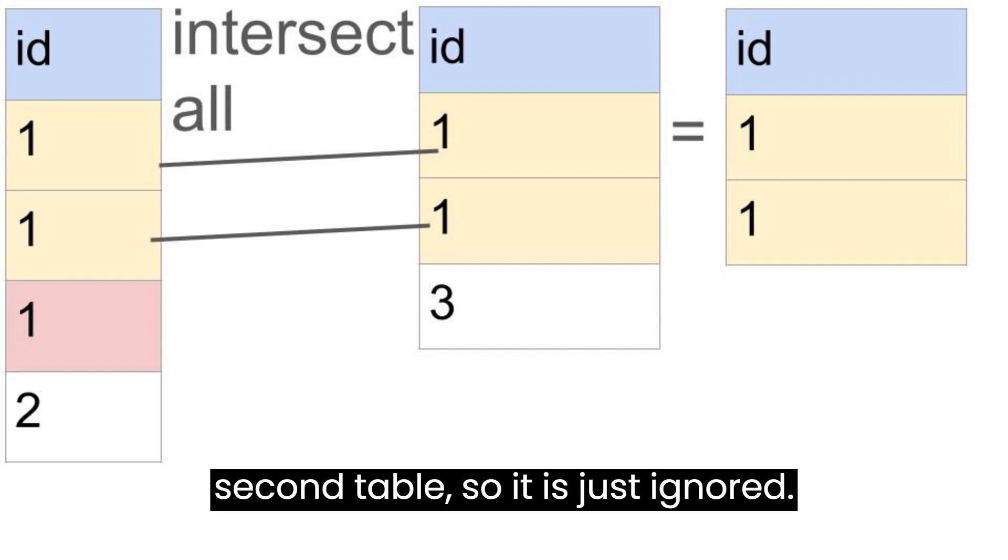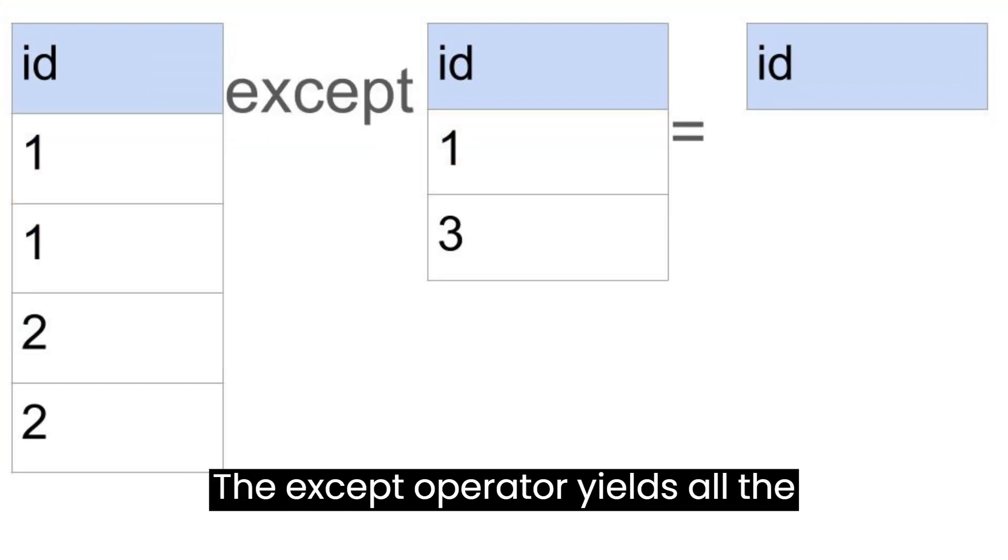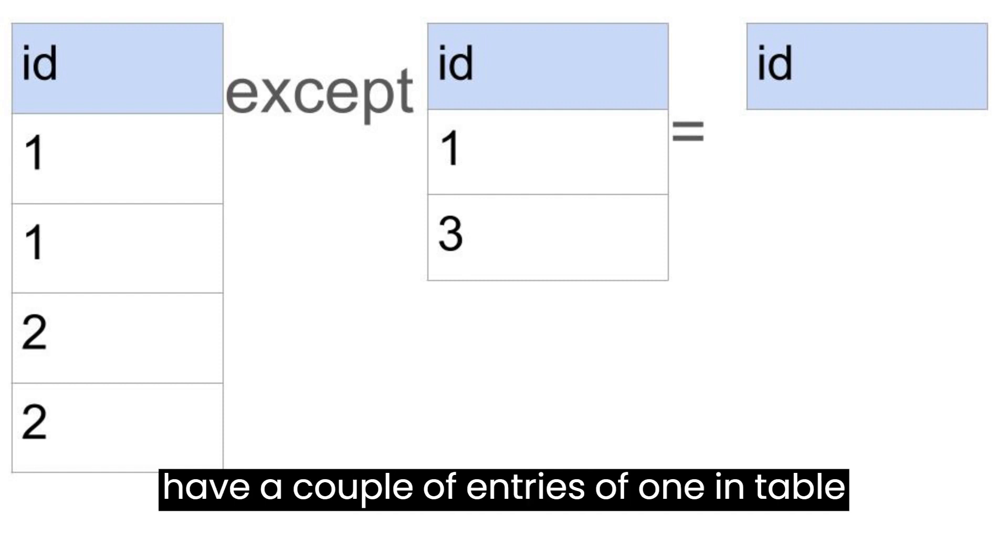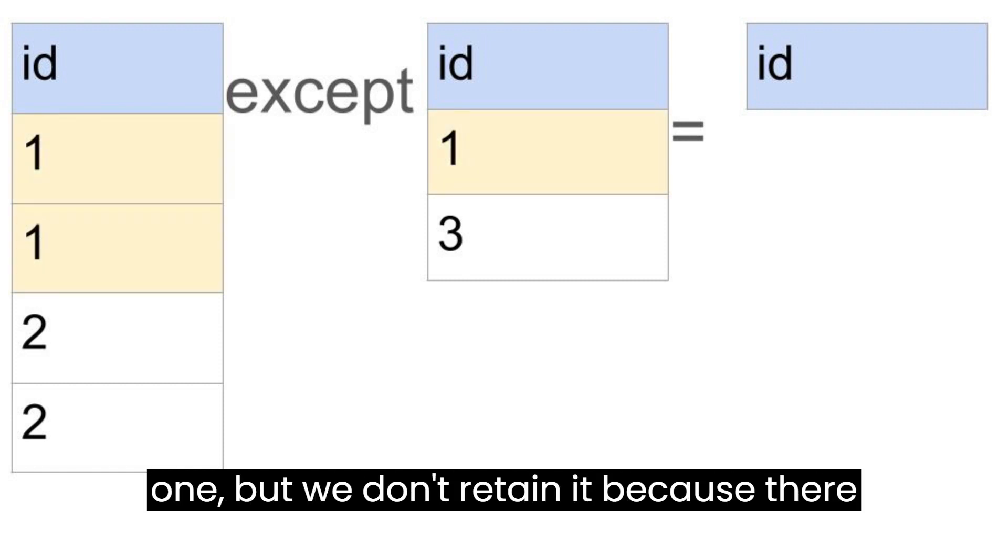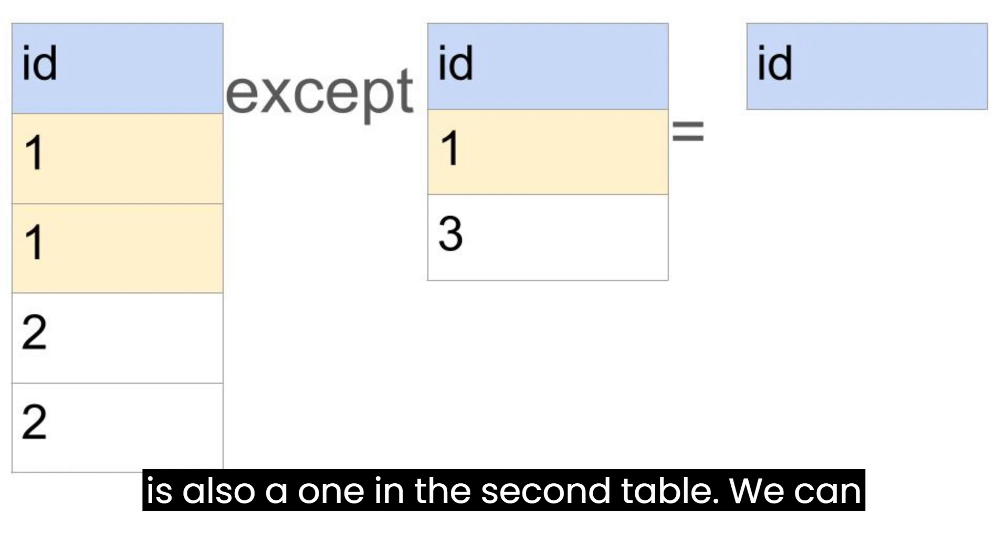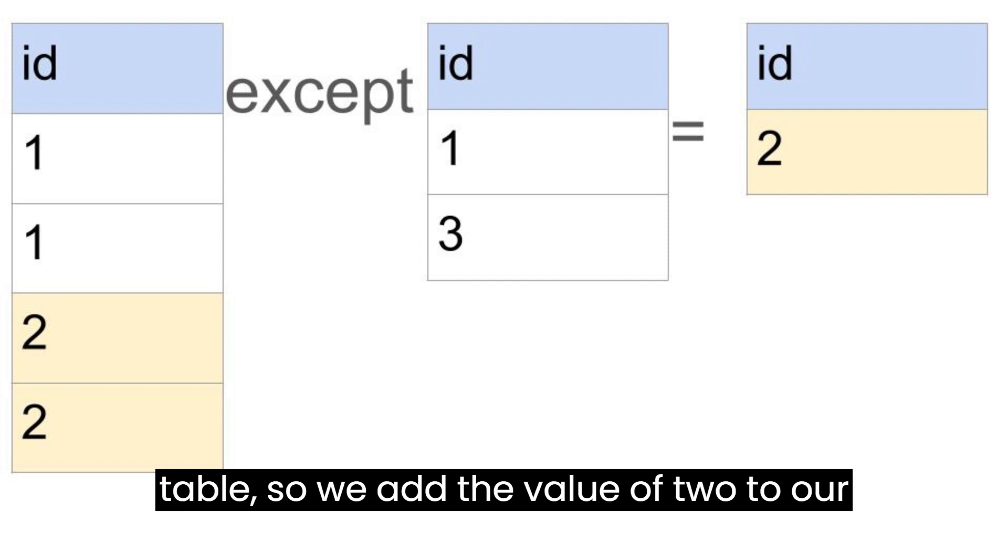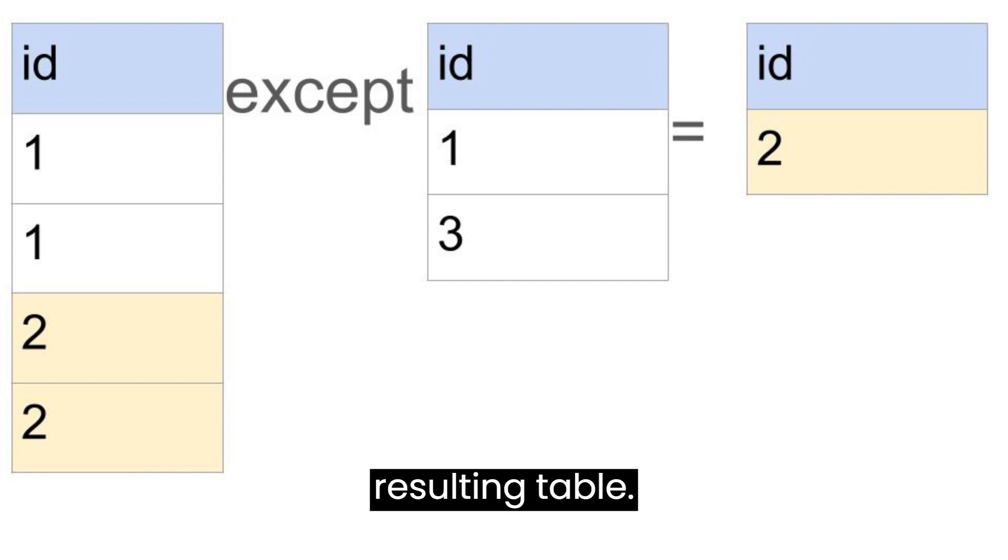The EXCEPT operator yields all the distinct values in table 1 that are not present in table 2. We can see that we have a couple of entries of 1 in table 1, but we don't retain it because there is also a 1 in the second table. We can see we have entries of 2 in table 1. There is no value of 2 in the second table, so we add the value of 2 to our resulting table.